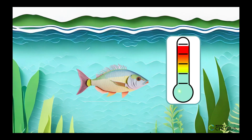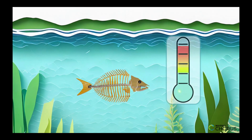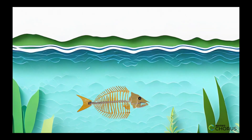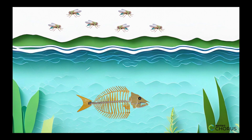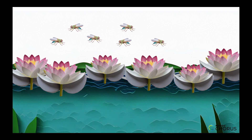Some of the fish might not be able to survive in warmer water and they could die off. Without as many fish, there might not be enough predators to eat the insects, so the insect population could increase. This could then lead to an overgrowth of plants, which could cause the pond to become murky and block out sunlight, making it even harder for the fish to survive.